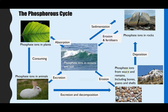Phosphate ions from waste and animal remains are both sources of phosphorus. Guano, produced by birds, is the white material visible in excretion and is really rich in phosphorus, as are the shells and bones of animals. Over time, these will both erode and break down, releasing the phosphate ions back into oceans, rivers, and soil.